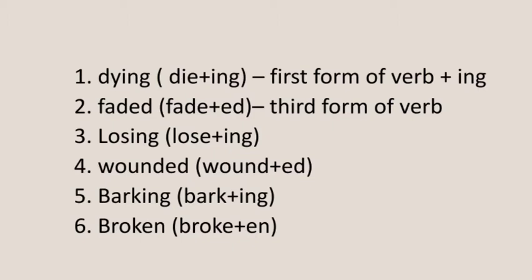Now let us look at the words in examples 2, 4, and 6: faded, wounded, and broken. These three words are the third form of the verb, meaning they always end in -d, -ed, -en, or -n. So the words dying, faded, losing, wounded, barking, and broken — these words are participles.